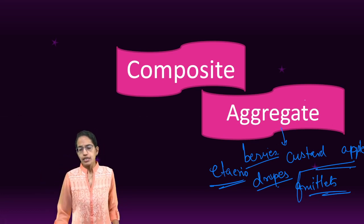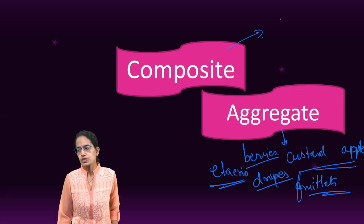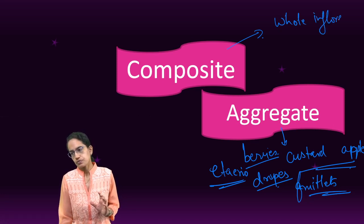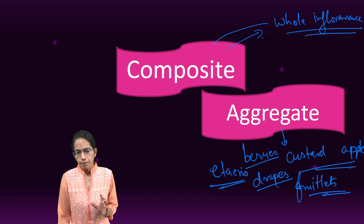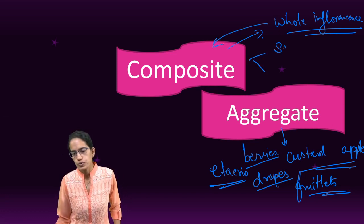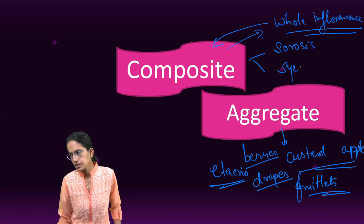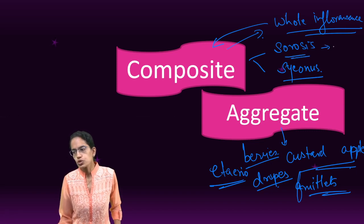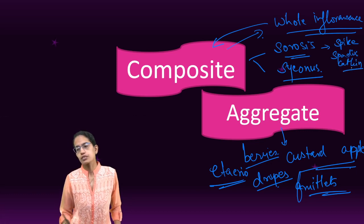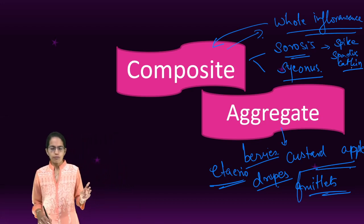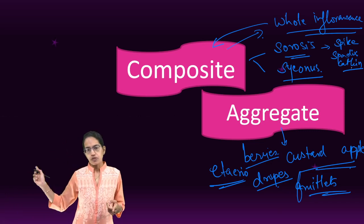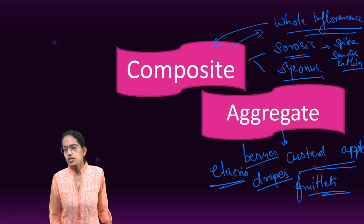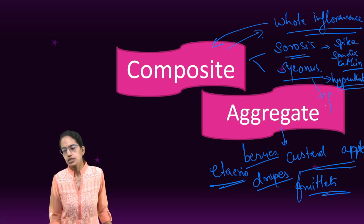Aggregate fruit is what is called etaerio. Composite fruits develop from the whole of the inflorescence. Composite fruits can be of two types: sorosis and syconus. Sorosis are fruits which develop from spike, spadix, or catkin inflorescence — three types of inflorescence covered in our previous lecture on inflorescence. Syconus develops from hypanthodium inflorescence. Syconus is seen in Ficus carica, and sorosis is usually seen in mulberry.